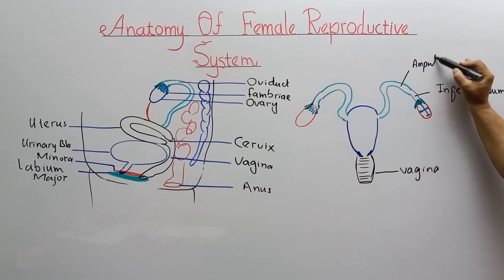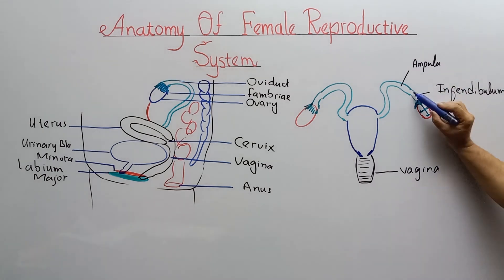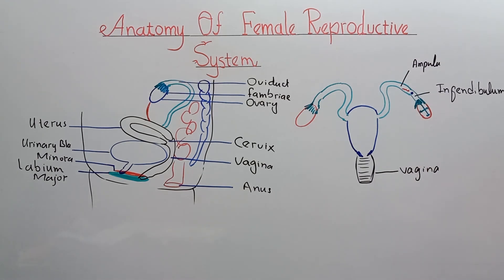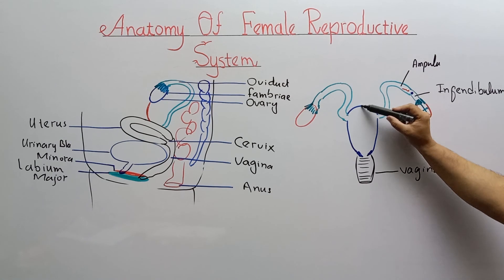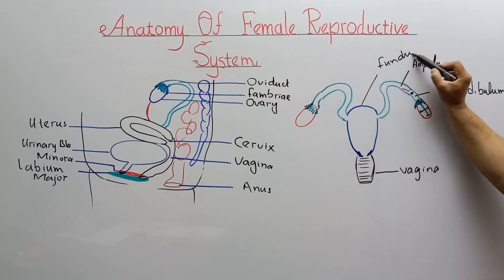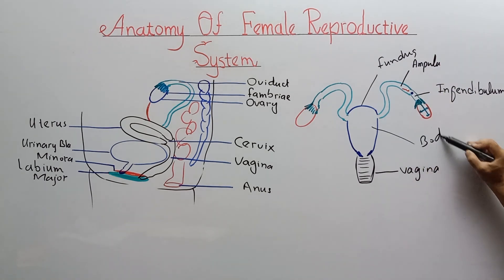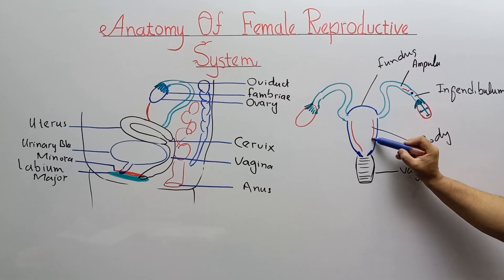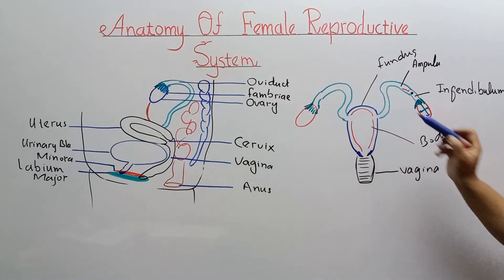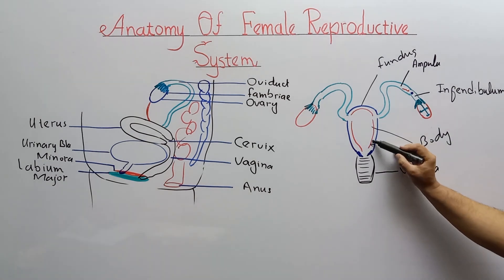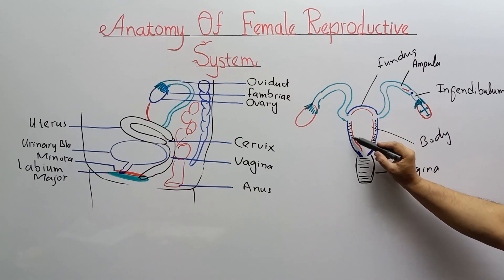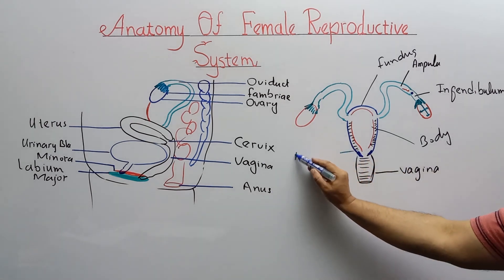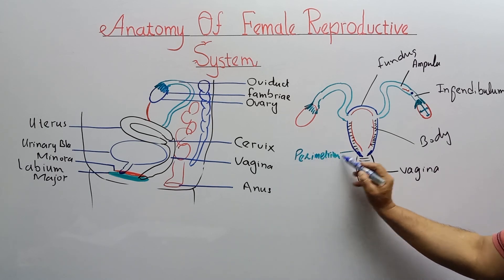After the infundibulum, there is a long structure called the ampulla, which curves downward. The union of sperm and egg — fertilization — occurs in the proximal part of the oviduct, or fallopian tube. This upper dome-like portion is called the fundus, and below it is the body of the uterus. The uterus has three major layers: the innermost is the endometrium, the middle muscular layer is the myometrium, and the outermost layer is the perimetrium.